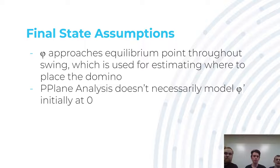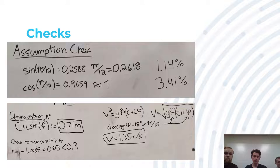So, in our final state, we assumed that phi approaches equilibrium point throughout the swing, which is used for estimating where to place the domino. So, the equilibrium point would be the best place for it to hit the domino, because that's the farthest that it goes. And also, we knew that p-plane doesn't necessarily model phi prime at zero initially.